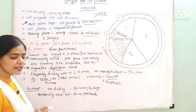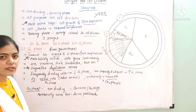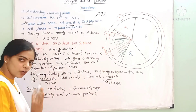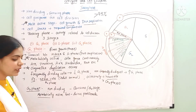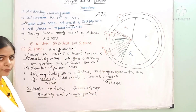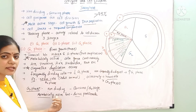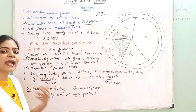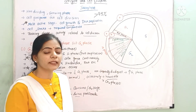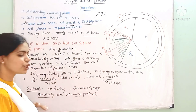Non-dividing cells enter into a special stage called the G0 phase, also called the quiescent or dormant stage. G0 means inactive or dormant stage. In this stage, non-dividing cells are metabolically active but they do not proliferate. Sometimes, they will divide when there is a need for division. So G0 phase is the stage where non-dividing cells reside — they are metabolically active but do not divide unless required.